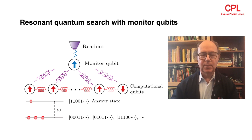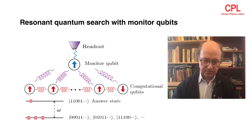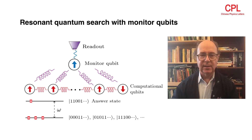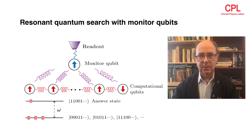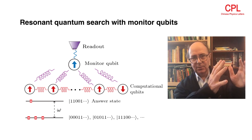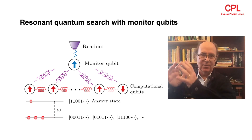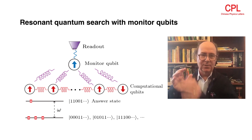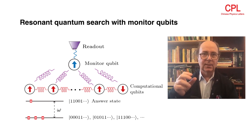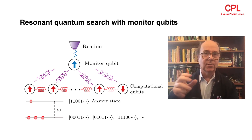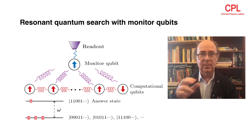What a monitor qubit does is allow you to tell whether resonance has occurred in the main computation. So you have computational qubits which are doing a computation, and then you have a monitor qubit which is telling you important information about how the computation has proceeded.